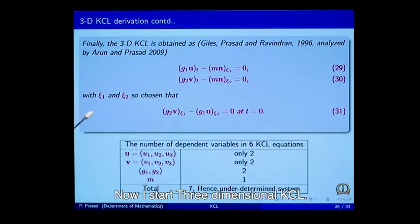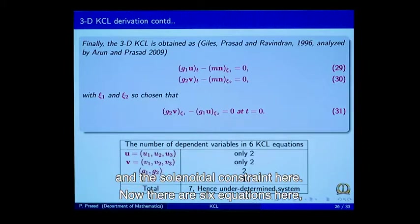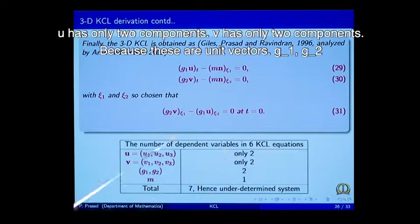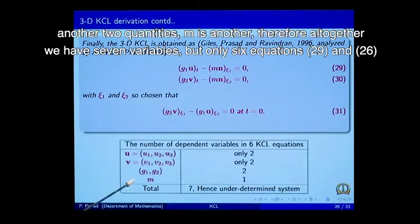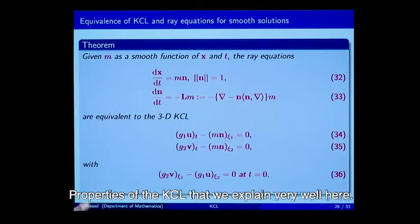Now I state the three-dimensional KCL, which consists of equations 29, 30, and the solenoidal constraint. There are six equations here, but the solenoidal constraint is not counted as part of the KCL. The vectors u and v each have two independent components (being unit vectors), g_1 and g_2 are two more quantities, and m is another. Altogether we have seven variables but only six equations — therefore it is an underdetermined system.